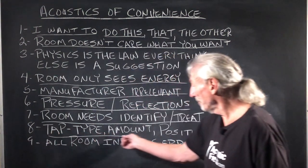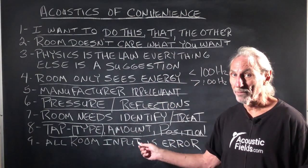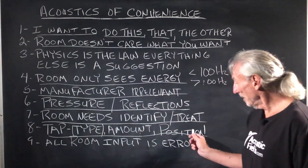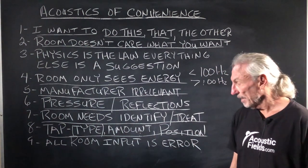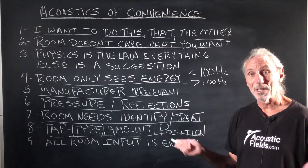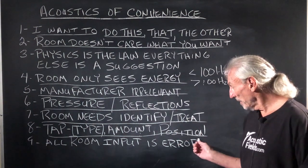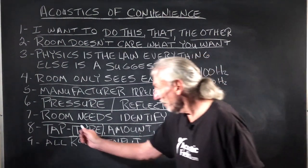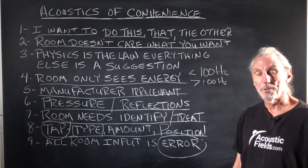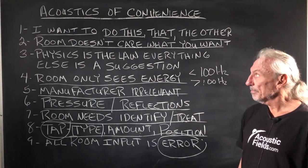What do we do when we find the problems? We use the right type of treatment and we use the right amount — this is where a lot of people mess up a lot — and then the positioning of the treatment. Just remember, everything we put into this room is air. We're introducing a bunch of things that are going to create a high air rate, so then we have to go back to treating. Lots of air means lots of treatment: the right amount, in the right position, to deal with the low frequency issues or the upper frequencies.